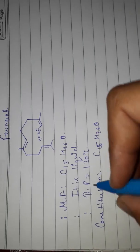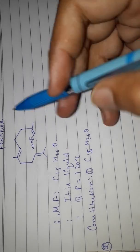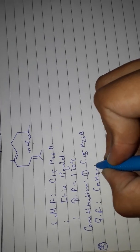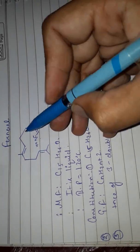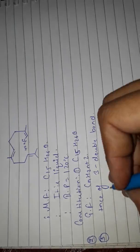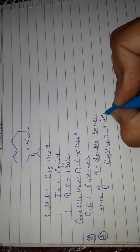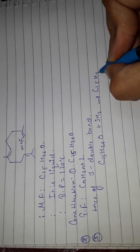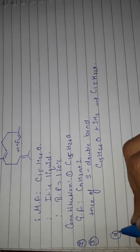For the constitution of farnesol, the general formula is CnH2n+2. There is a presence of three double bonds in the structure. This is confirmed by C15H26O plus 3H2 giving C15H30O, which means the presence of three double bonds in farnesol.